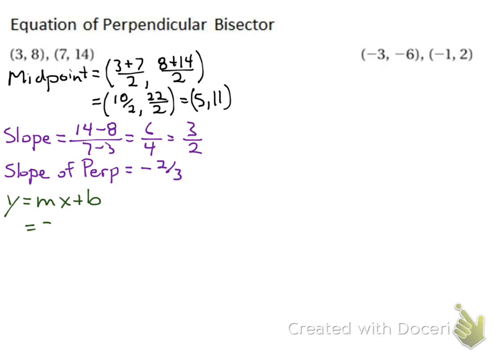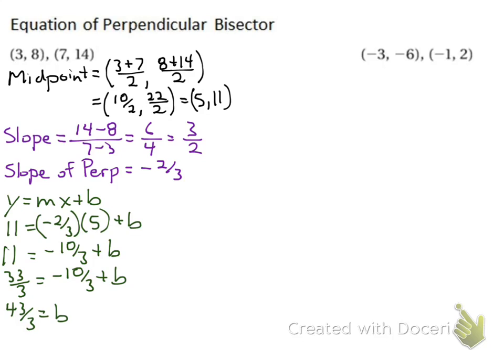That's going to be the opposite reciprocal of 3 over 2, which is negative 2 thirds. So I have my midpoint. I have my slope. Now, I go to my equation. It's going to be y equals mx plus b. I know m, my slope, is negative 2 thirds. x, I know is a midpoint. That's going to be 5. And y is 11. I'm solving for b. 11 equals negative 10 thirds plus b. I'm going to change 11 to be thirds. That's going to be 33 thirds equals negative 10 thirds plus b. I then add 10 thirds to both sides and I get 43 thirds equals b. I needed that so I can now write my final answer. y equals negative 2 thirds x plus 43 over 3. And that is my equation of the perpendicular bisector from the points 3, 8, and 7, 14.